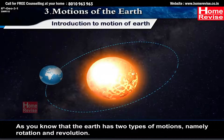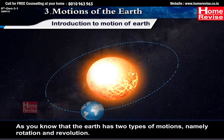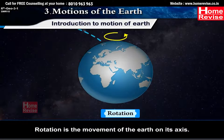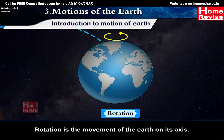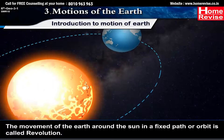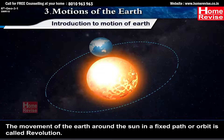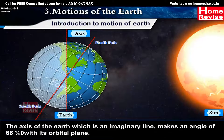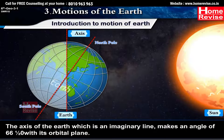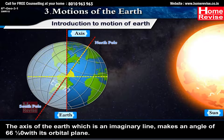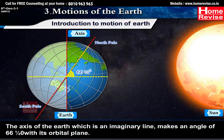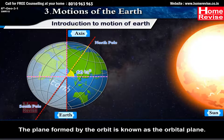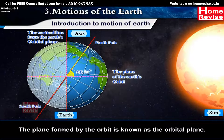The Earth has two types of motions, namely rotation and revolution. Rotation is the movement of the Earth on its axis. The movement of the Earth around the Sun in a fixed path or orbit is called revolution. The axis of the Earth, which is an imaginary line, makes an angle of 66.5 degrees with its orbital plane. The plane formed by the orbit is known as the orbital plane.